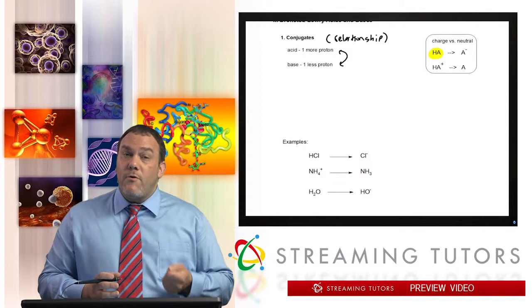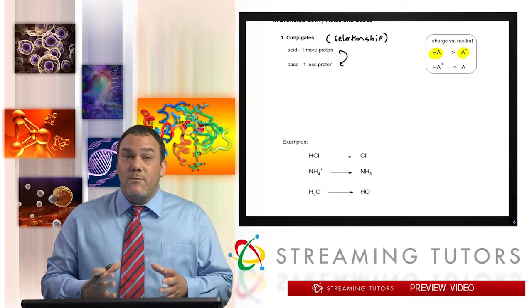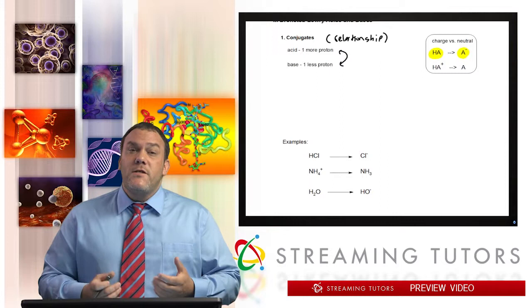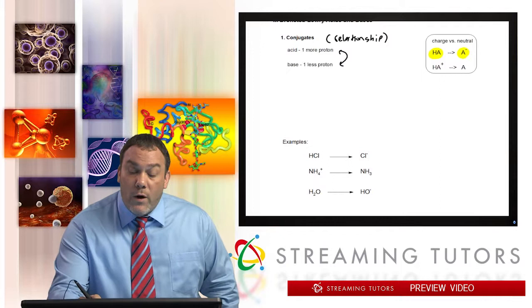Let's take a look over here at this chart on the right. Notice how if I have acid HA, and I was to pull off its proton, it would become A-. Notice that because the acid was neutral, it becomes the negative form. And this is a trend that you're going to have to connect with. So a neutral acid, after it loses its proton, becomes a negative conjugate base.